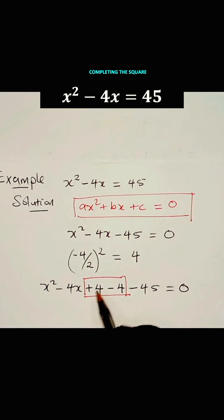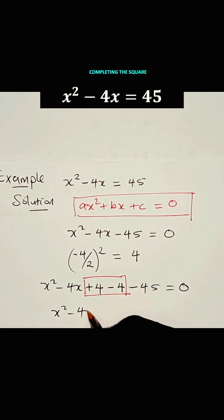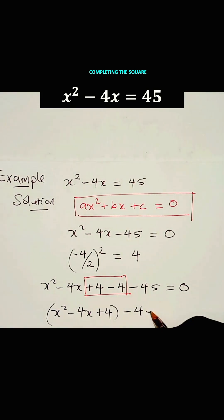And now, we shall enclose the positive 4 with these terms. Then we say X squared minus 4X plus 4 minus 4. The negative one goes with the constant. Minus 45 is equal to 0.